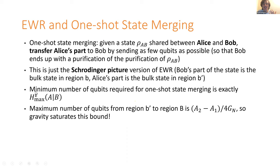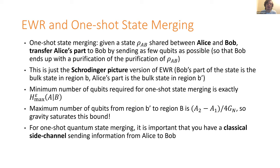In fact, it's a general statement that the maximum number of qubits from region little b prime that can be accessed in region big B is given by the difference between areas. So gravity is saturating this bound — achieving the most efficient way to do one-shot quantum state merging. For quantum state merging you're generally allowed a classical side channel from Alice to Bob, but the total classical bits that can be decoded from little b prime in region big B is also just the difference between areas — there's no side channel classical information in addition to the qubits.